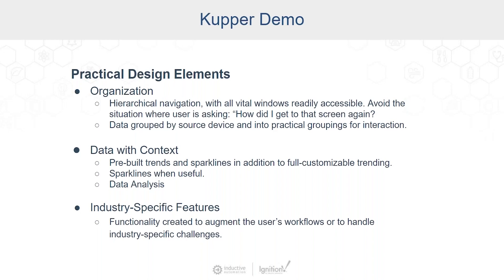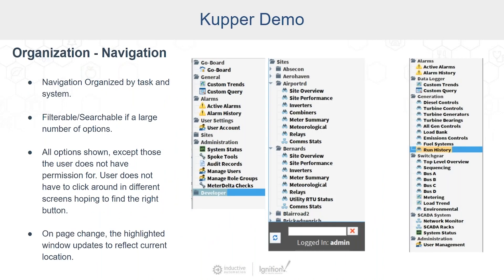I'll show some of the ways we try to be organized. For complex systems, we usually implement a tree-style navigation structure. This immediately provides all the options and allows the user to see where they are. The example on the right groups windows by usage for a 70-site solar field data acquisition system.